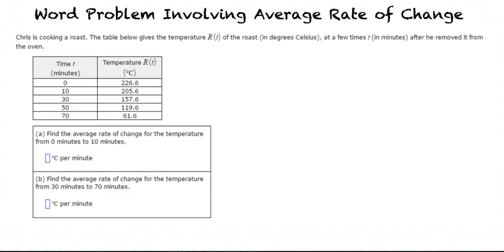Here is the situation. Chris is cooking a roast. The table below gives the temperature R of T of the roast in degrees Celsius at a few times T in minutes after he removed it from the oven. For part A, we want to find the average rate of change for the temperature from 0 minutes to 10 minutes. And for part B, find the average rate of change for the temperature from 30 minutes to 70 minutes.